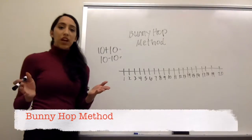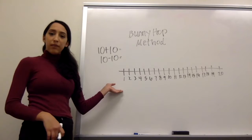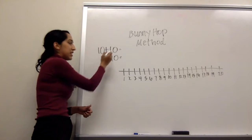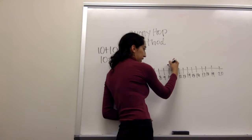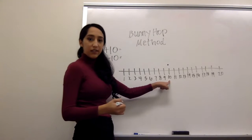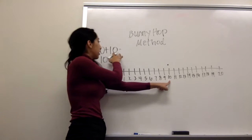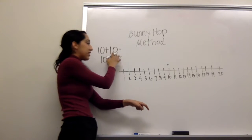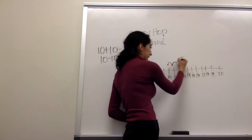Okay, so the bunny hop method is a method to help you add and subtract on the number line. So for example, 10 plus 10. The dot represents your bunny on the 10. So this represents the number you will add. So you will add 10 plus 10. So 10, you have your dot and you hop 10 times.